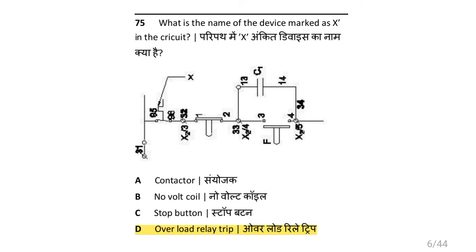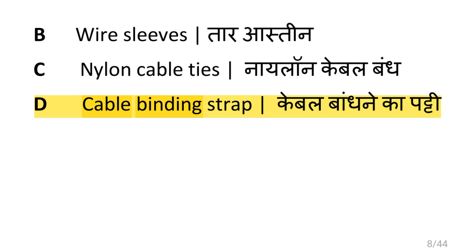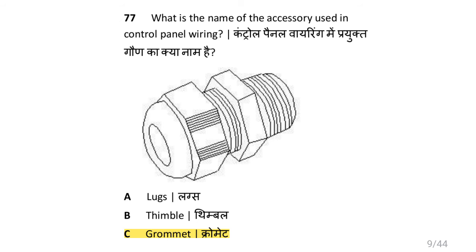What is the name of the device marked as in the circuit? i.e. overload relay trip. What is the name of the accessory used in the control panel wiring? i.e. cable binding strap. What is the name of the accessories used in the control panel wiring? i.e. grommet.